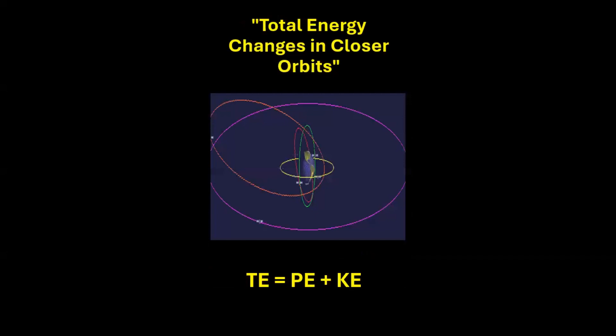So what happens to the total energy of a satellite? If potential energy reduces and kinetic energy increases, what way does this affect the total energy?